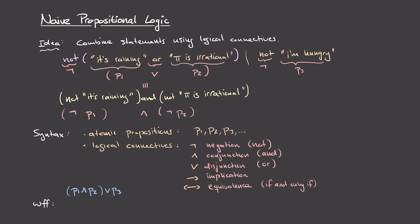So let's give some examples of well-formed formulas. Well-formed formulas are things like '(p1 and p2) or p3'. Here it's clear because of the brackets that first we're applying conjunction to p1 and p2, and then to that entire result we're applying a disjunction with p3. So this would be a well-formed formula because we know in what order we're applying the operations and to what parts.